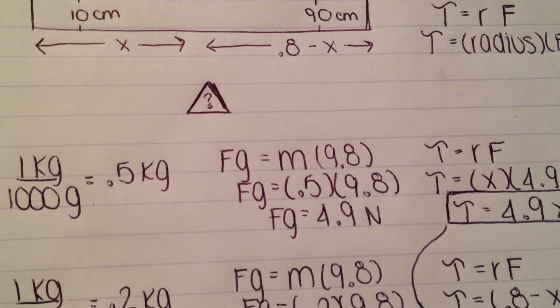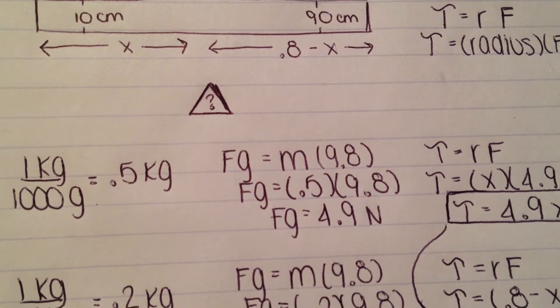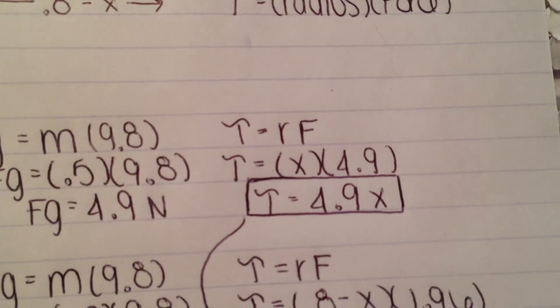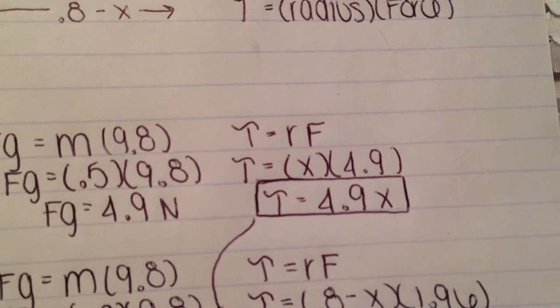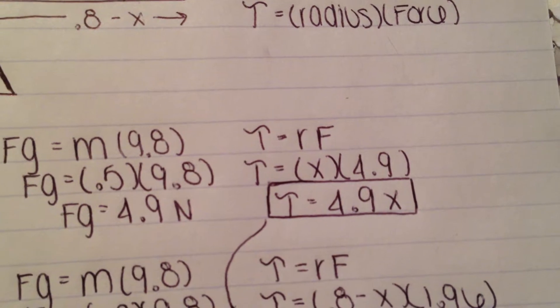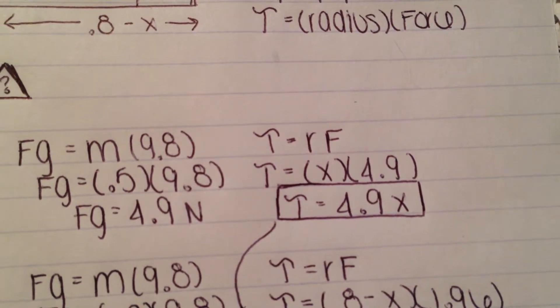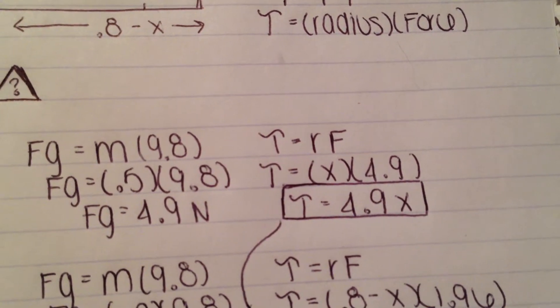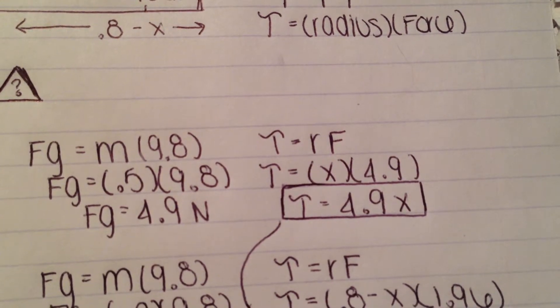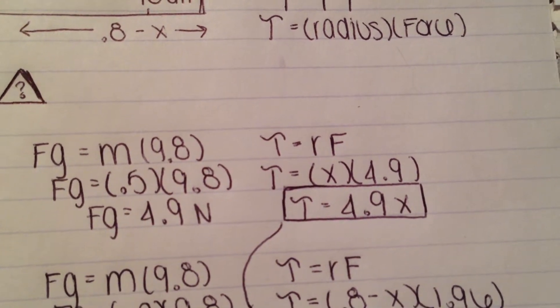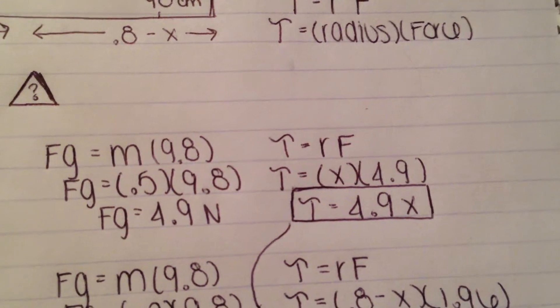Now that you have the radius and force, you can find the torque for the 500 gram mass. We know that torque equals radius times force. You plug in x for the radius and 4.9 in for the force. Torque equals x times 4.9. Your torque is 4.9x. We'll use this torque later to help finish the problem.